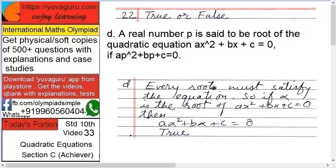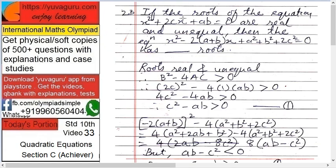A real number P is said to be the root of a quadratic equation ax² + bx + c = 0 if ap² + bp + c = 0. This means if you input the value P instead of x, you must get 0. So that is true. Every root must satisfy the equation. If alpha or P is the root, then a(alpha)² + b(alpha) + c should equal 0. Or if P is the root, then ap² + bp + c should equal 0. That's why it's true.